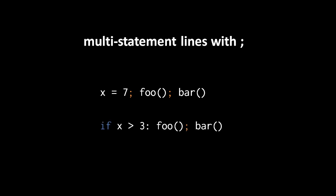And in fact, you could use a semicolon to put multiple statements in a one line block. So here this if block has two statements, first a call to foo, and then a call to bar.